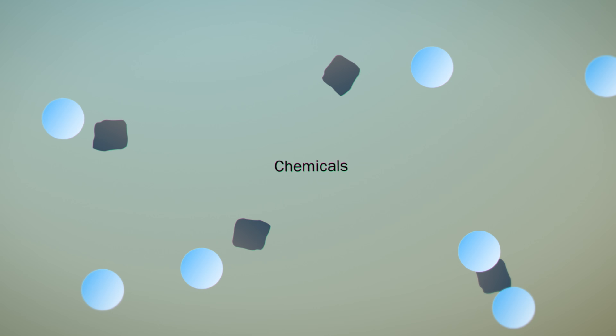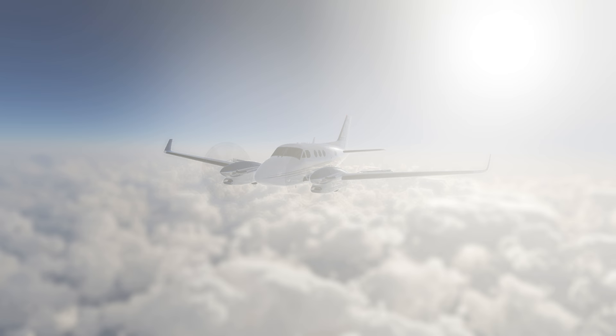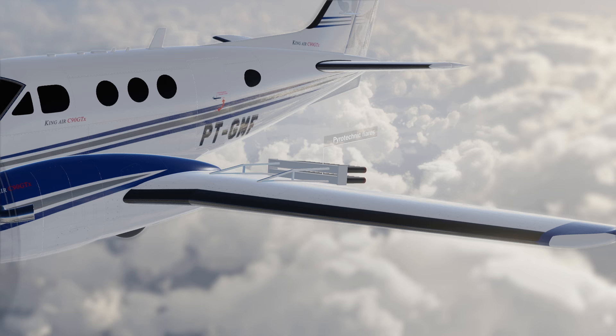Helping that process out by using chemicals is known as cloud seeding. In order to achieve this, additional particles or nuclei where the water molecules can attach to are added. This can be achieved using airplanes equipped with pyrotechnic flares that hold chemicals like salts, dry ice, or silver iodide, which is commonly used.